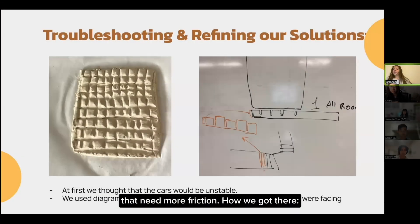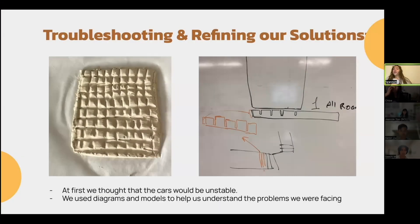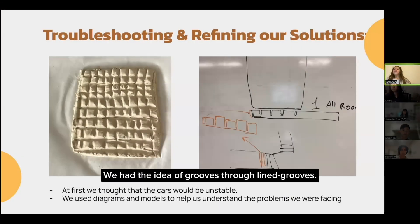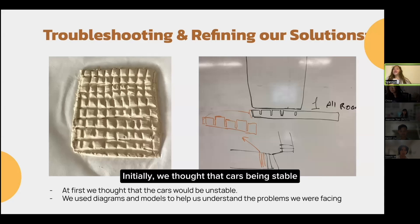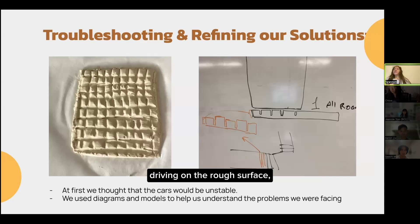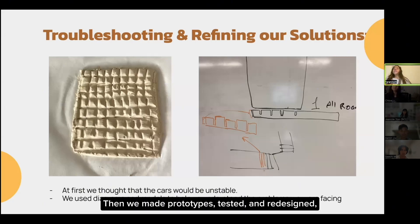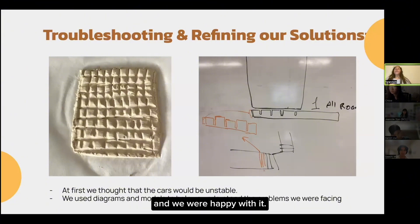How we got there: We had the idea of grooves through line grooves. Initially, we thought that cars would be unstable driving on the rough surface, so we did further research. Then we made prototypes, tested, and redesigned, until we thought that our solution was the most effective and we were happy with it.